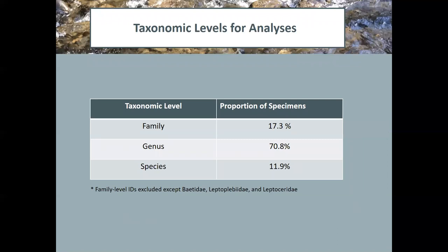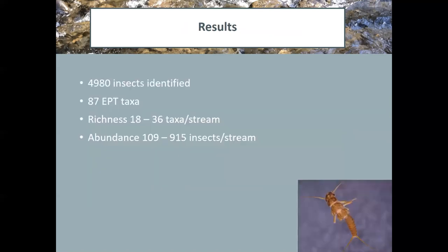Specimens were identified mostly to genus, about 70%. 17% were identified to family. And that was based on taxonomic difficulty or, for instance, with the leptophlebiid mayflies, their gills fell off in transit back to the lab and we were not able to identify them. And then a few that were very easy were taken to species. Mostly these we would see done to genus or family level for most water quality purposes. Total of 4,980 insects were identified. 87 were EPT taxa. Richness from everything collected at each stream ranged from 18 to 36 taxa per stream. And that's just EPT taxa.